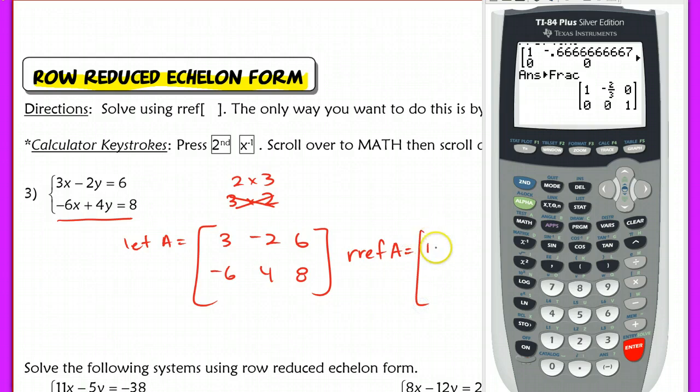It says that I have row reduced echelon form of this matrix. Matrix A is 1, negative 2 thirds, 0, 0, 0, 1.